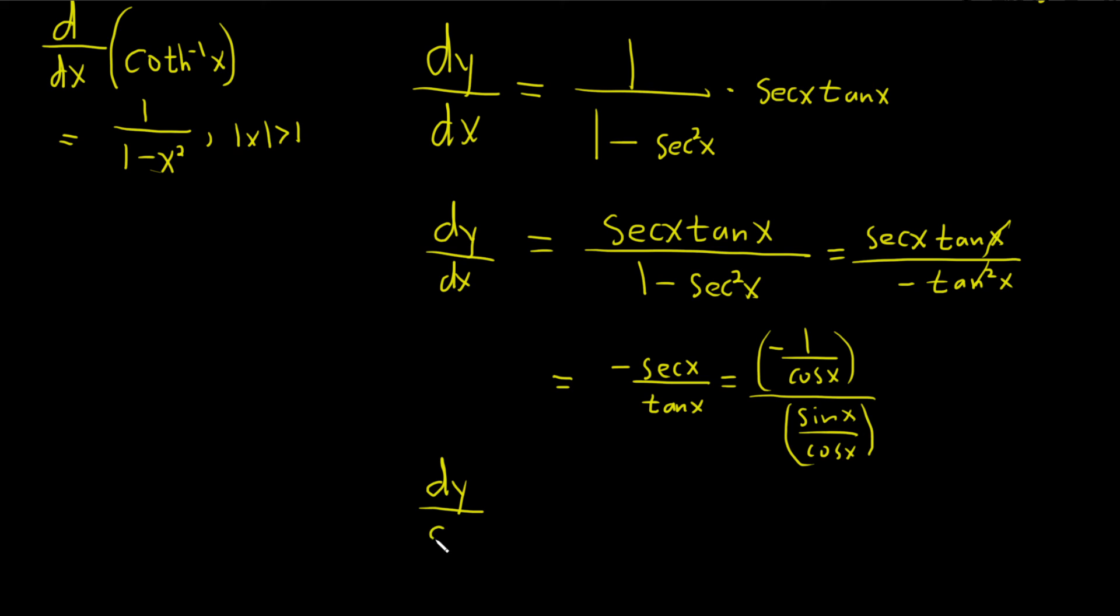So dy dx is equal to negative 1 over cosine x. So dividing by sine over cosine means we really multiply by cosine over sine. And so what happens here is we get some cancellations. We get negative 1 over sine.